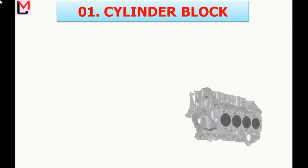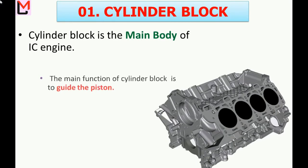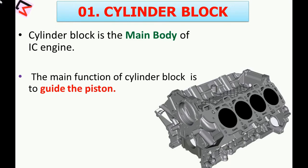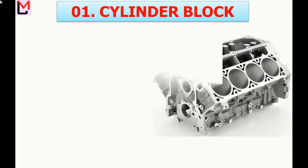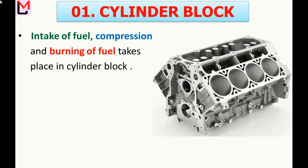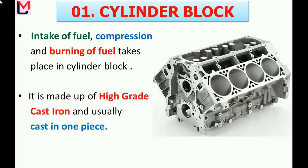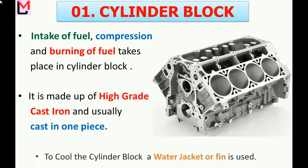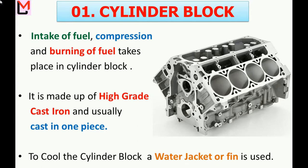The first part is the cylinder block. It is the main body of the internal combustion engine. Its main function is to guide the piston. Many operations take place in the cylinder block — intake of fuel, compression of fuel, and burning of fuel. The cylinder block is made up of high-grade cast iron and is usually cast in one piece. Due to more heat generation, the cylinder block needs to be cooled, which is why a water jacket or fins is used.